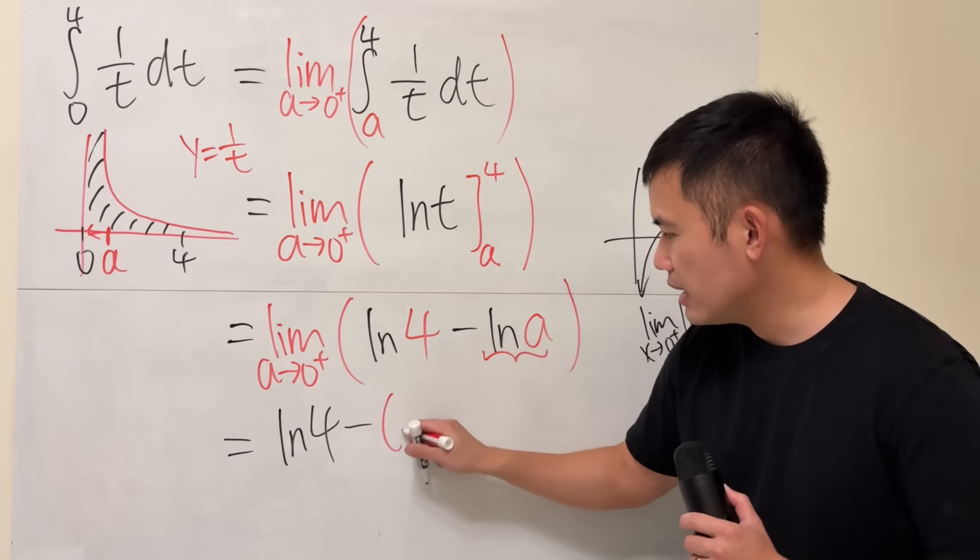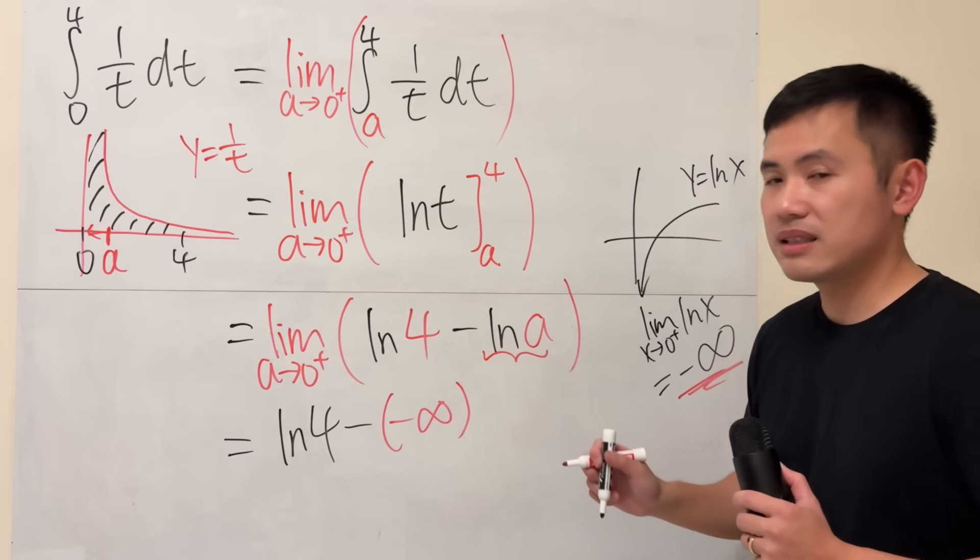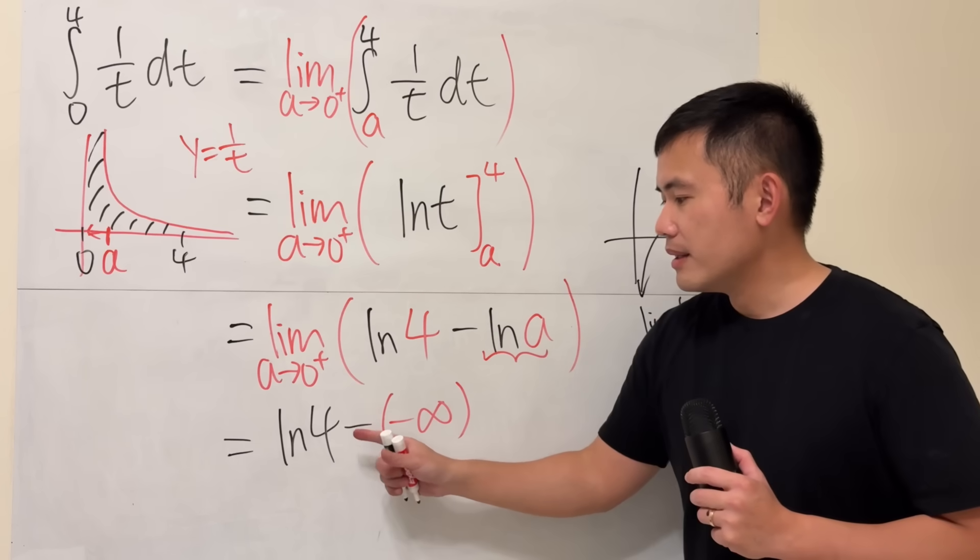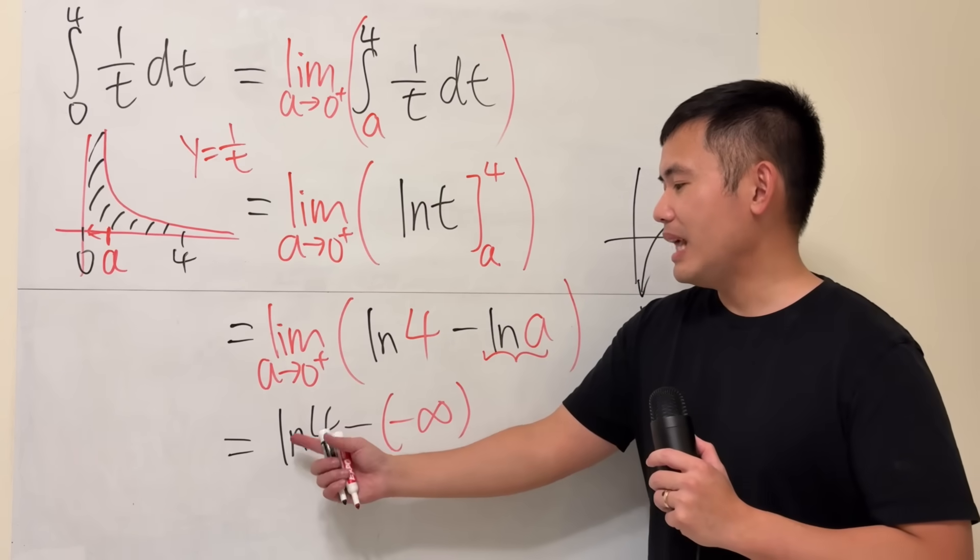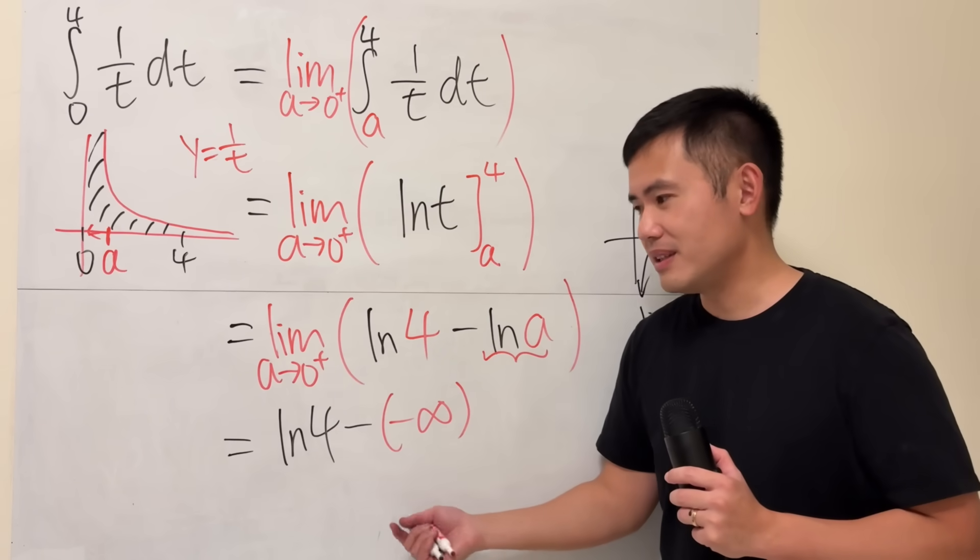So it's a minus, and then negative infinity, like that. Now, minus negative infinity is plus infinity, and ln 4 is just a finite number, plus infinity, the whole thing is infinity.